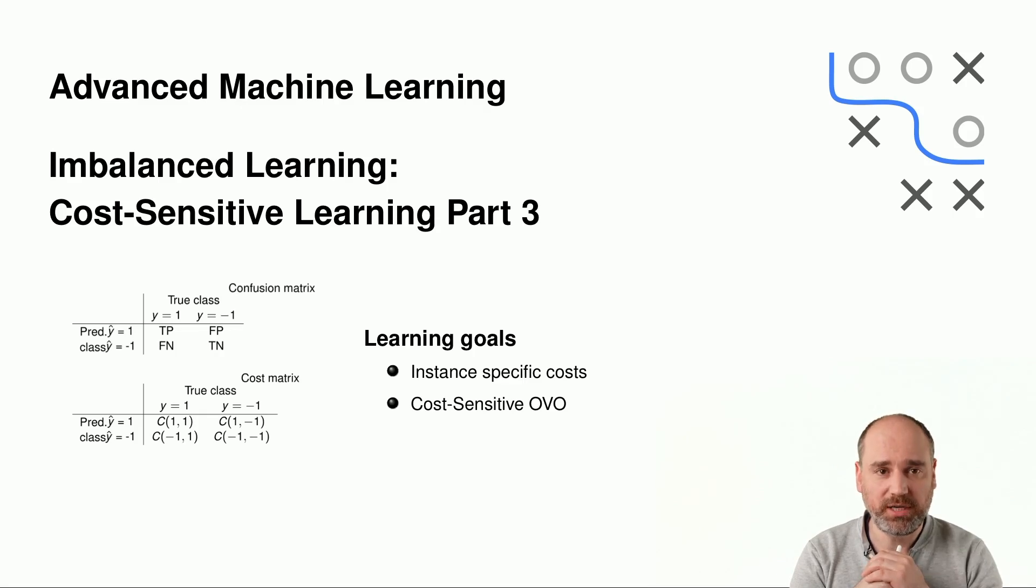Welcome to our advanced machine learning lecture and welcome to the third part on cost-sensitive learning. In this session here, we will discuss a more general version of cost-sensitive learning. Until now, we had basically assumed that the costs only depend on what the true class is and what our predicted class is. But the costs cannot change from observation to observation. We will generalize that to exactly that scenario. This is why we also call that instance-specific costs.